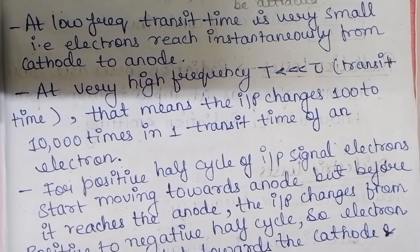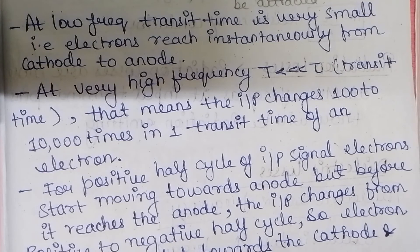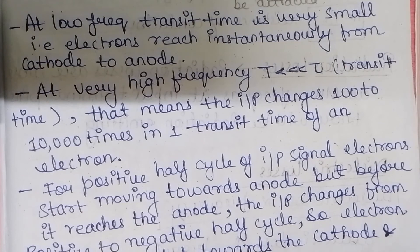There is a remedy for the transit time effect: to minimize transit time, the separation between the electrodes can be decreased, but this increases the inter-electrode capacitance. Alternatively, the plate-to-cathode potential V can be increased, but this cannot be increased indefinitely. Therefore, there must be a trade-off between the inter-electrode capacitance and the transit time.